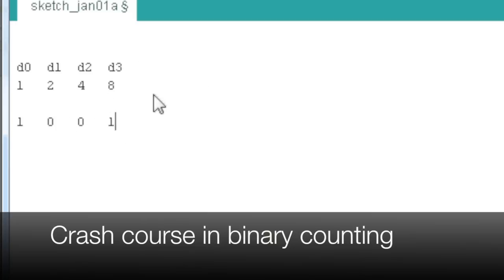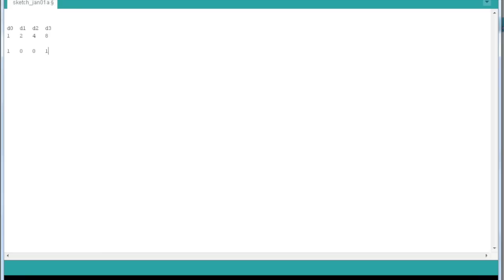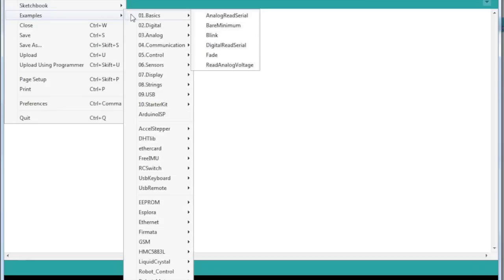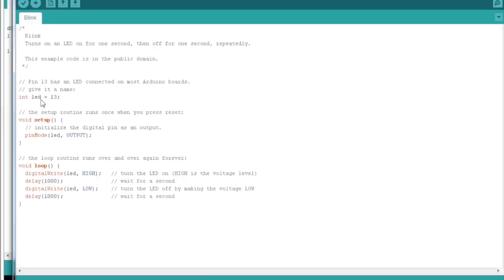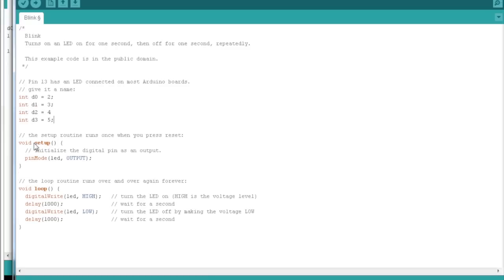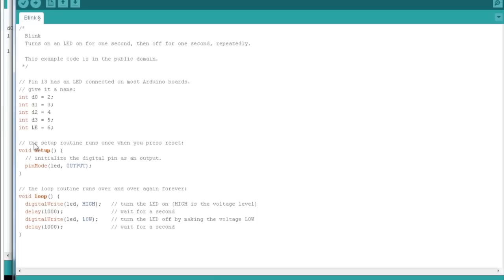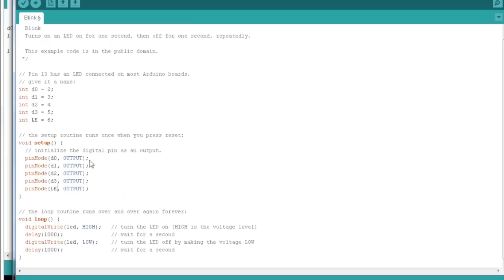And then when we have written this, we flip the LE, or latch pin. But let's start with the blink sketch. Once again, it has everything we need. So we have D0, which is pin 2. There, all our pins. In the setup, let's set the pin mode. We've set all the pins to outputs.